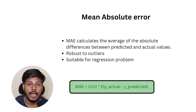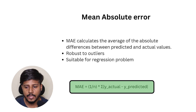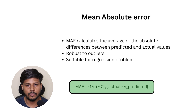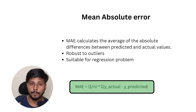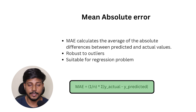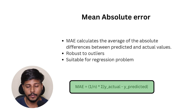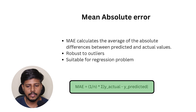Second, we have Mean Absolute Error (MAE), one of the most commonly used cost functions. It is also suitable for regression tasks and measures the difference between the predicted value and the true value — mathematically: (1/n) times the summation of the absolute difference between the true value and the predicted value. MAE is robust to outliers because we are not performing any squaring operation like we do in MSE, and it provides a linear penalty for errors.